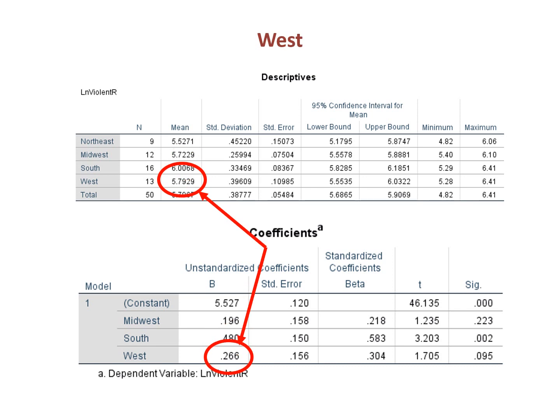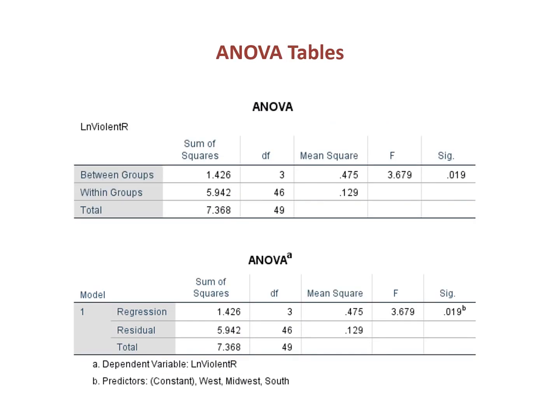The mean of West is the constant, 5.527, minus 0.266, which equals 5.793. Further evidence of how one-way ANOVA and simple OLS regression are related can be seen by laying the ANOVA tables from the two models side by side. Notice in our example, we get the same result.